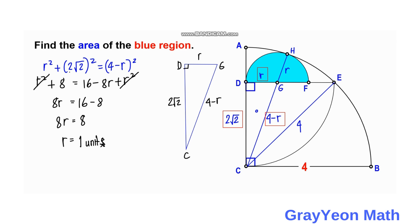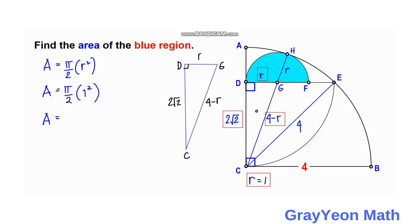Now for the final step, the area is equal to pi over 2 since this is a semicircle, times r squared. Area is equal to pi over 2 times 1 squared, the radius.